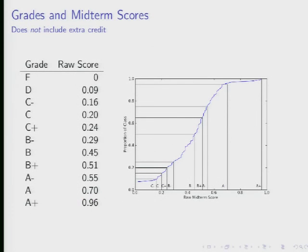Anyone who got higher than 0.70 got an A+. We terminated at 0.96 because that was the high score — if somebody had gotten 100%, they'd obviously also get an A+.